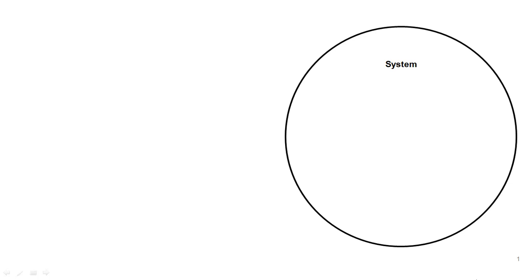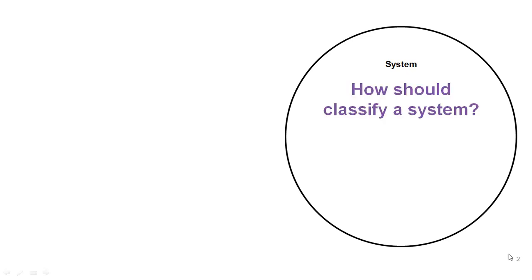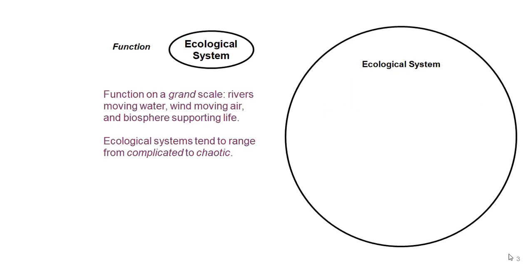In systems engineering, when we talk about engineering systems industrially or as system engineers, we need to classify systems into ranges of types because not all systems are the same. We may be designing things at very different scales and times, so a key thought process is how should we classify the systems we're interested in and how do we define the scope of the scale and type of system we're dealing with.